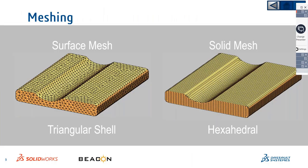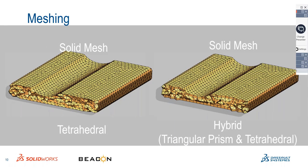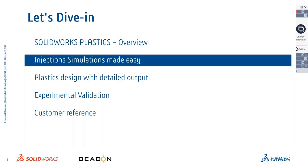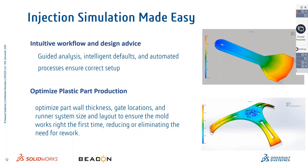SOLIDWORKS Plastics can work on any type of CAD model — reported geometry or native geometry. It starts with meshing, where the entire model is discretized into small triangular or hexahedral elements. There are also options for solid mesh with tetrahedral elements, as well as hybrid elements with triangular pressure elements.